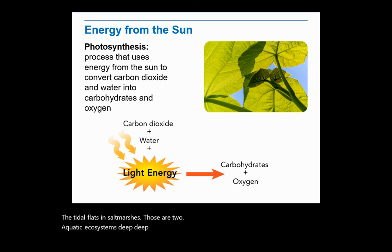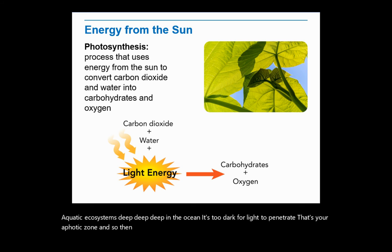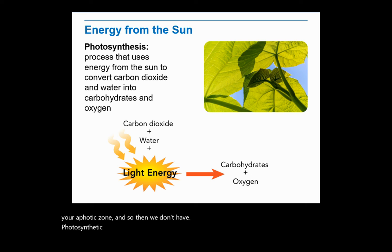Deep in the ocean, it's too dark for light to penetrate — that's the aphotic zone. And so we don't have photosynthetic bacteria down there; we have other primary producers.